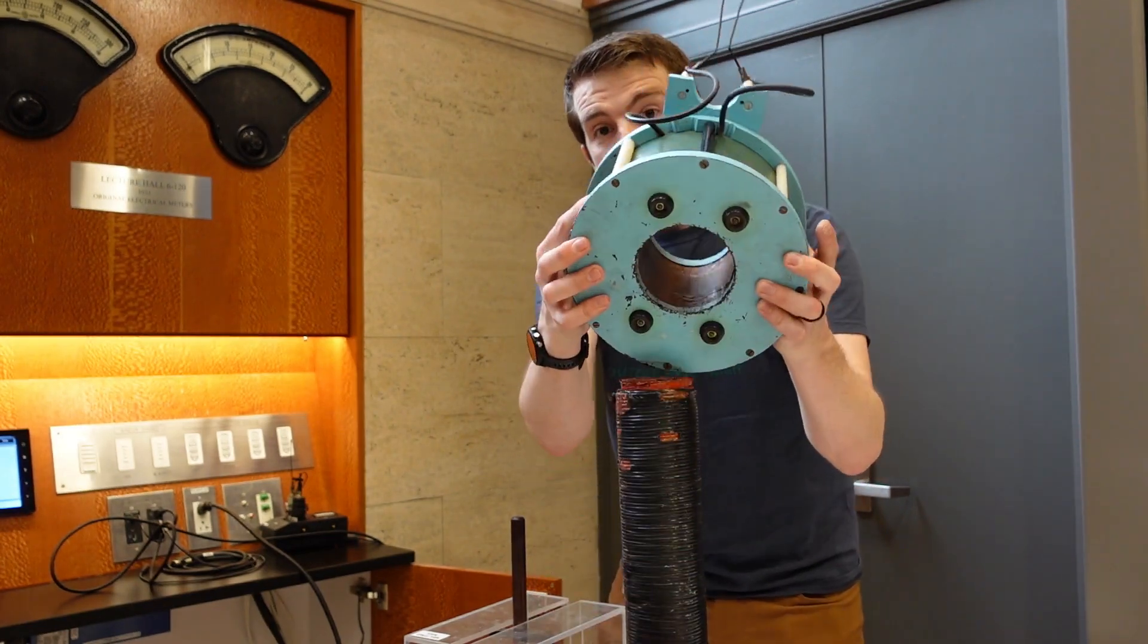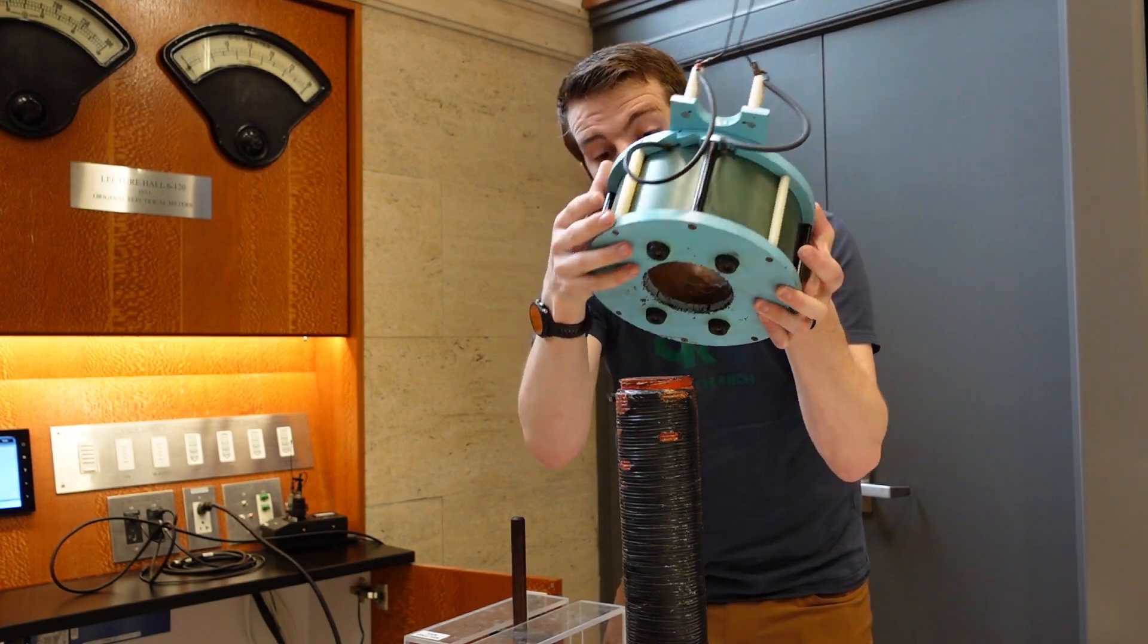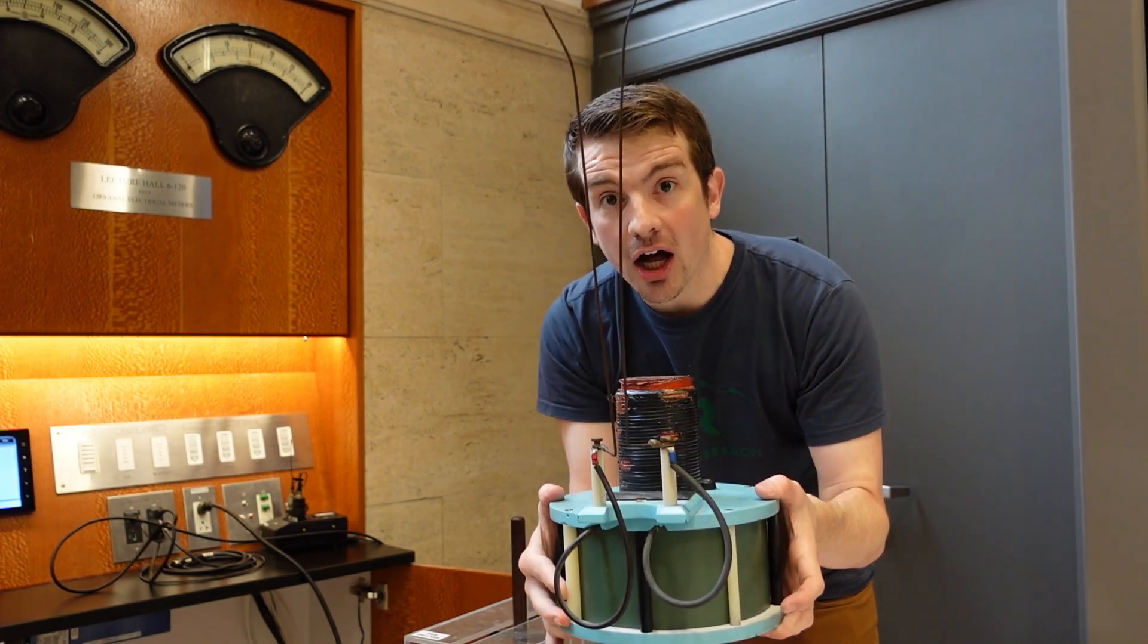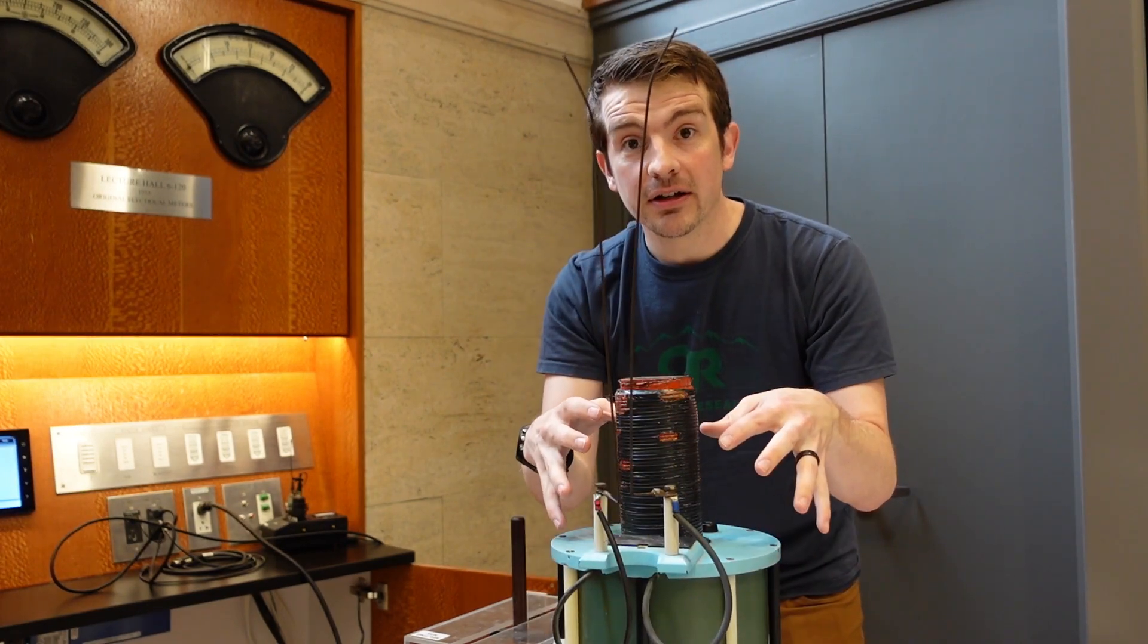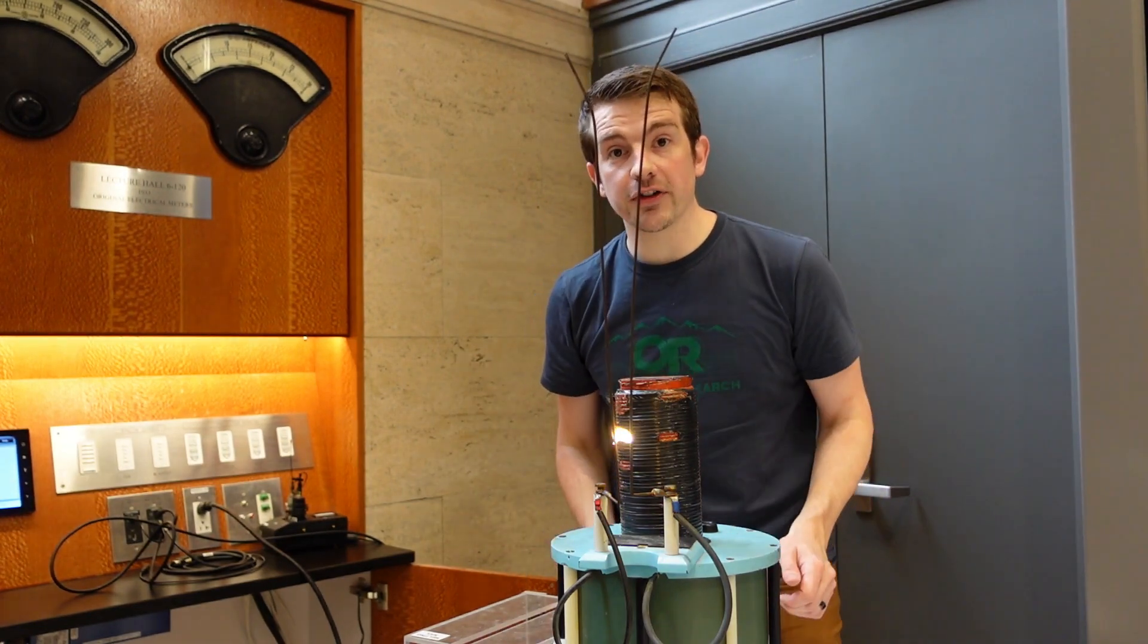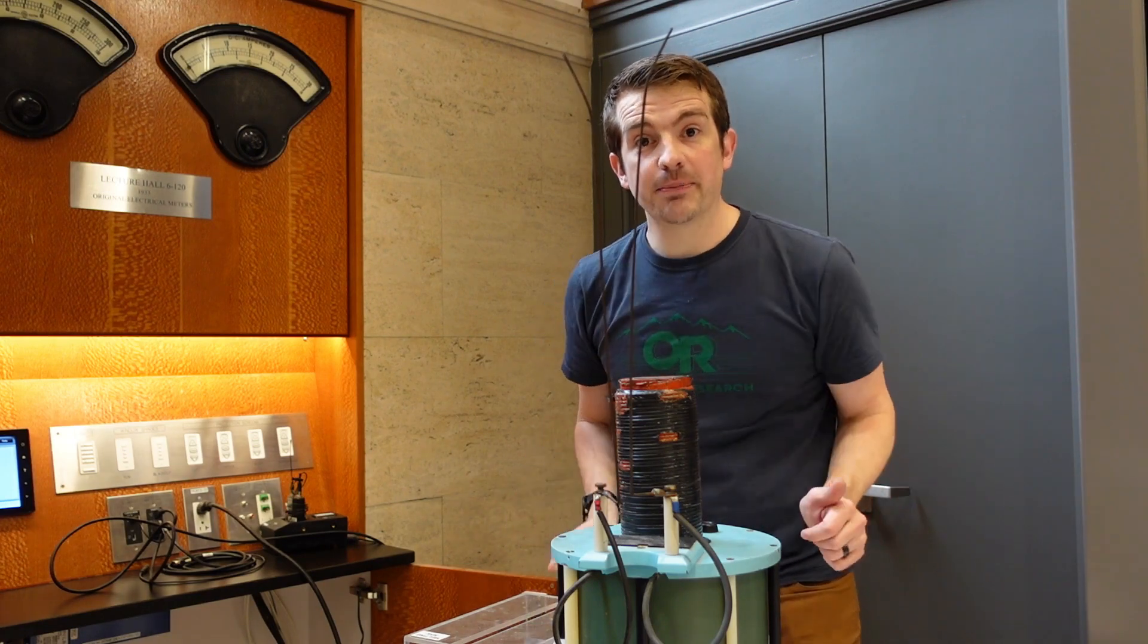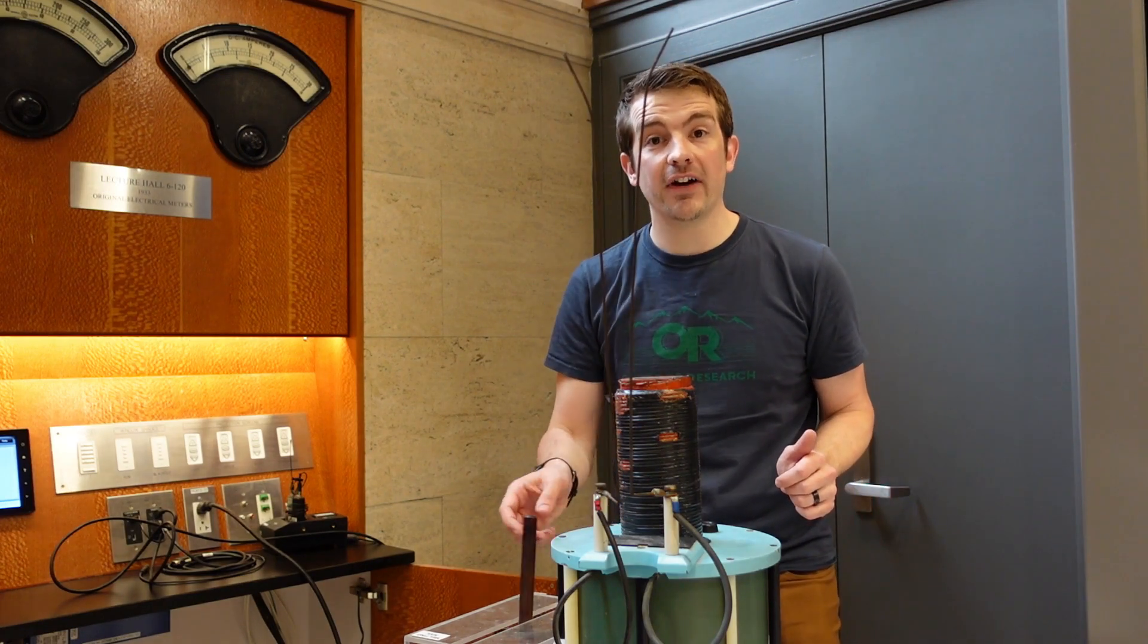That means this big loop of wire is going to be experiencing a very rapid change, a constant change of magnetic field inside of it. And we learned it's not going to like that. It's going to produce a very large voltage to oppose that, a voltage big enough to actually burn this gap of air.